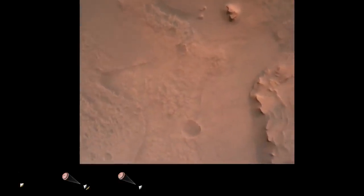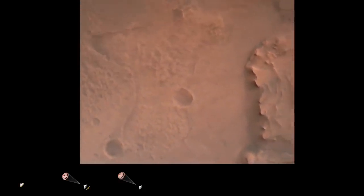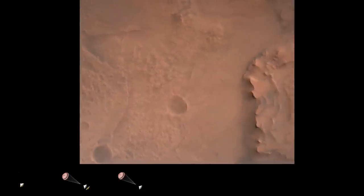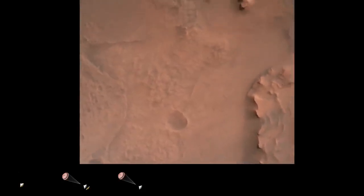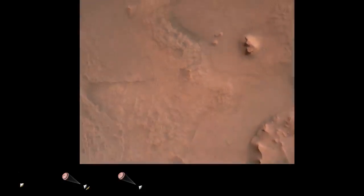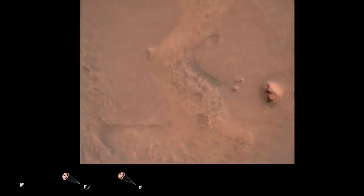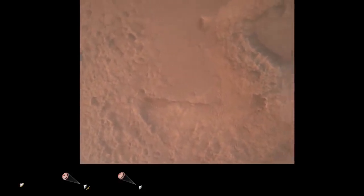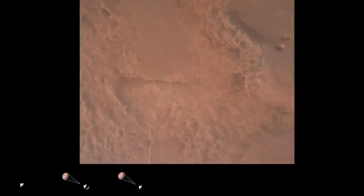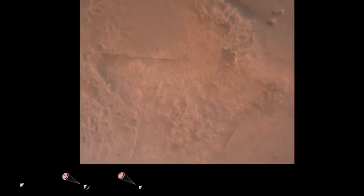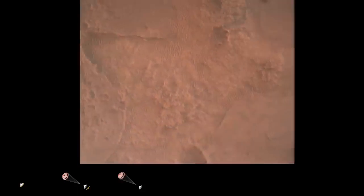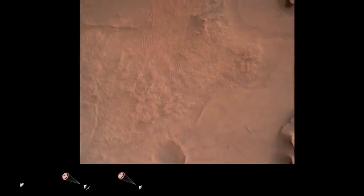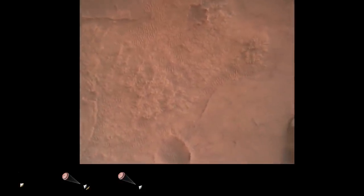Perseverance is continuing to descend on the parachute. We are coming upon the initialization of terrain relative navigation and subsequently the priming of the landing engines. Our current velocity is about 90 meters per second at an altitude of 4.2 kilometers. We have confirmation that the lander vision system has produced a valid solution as part of terrain relative navigation.